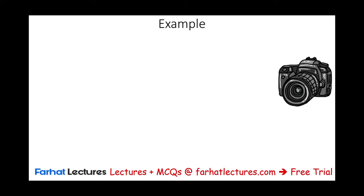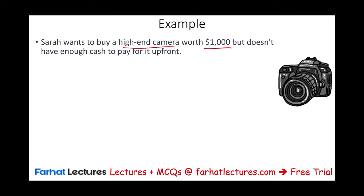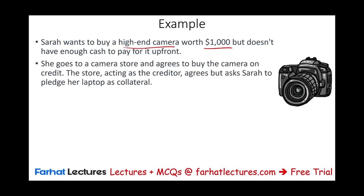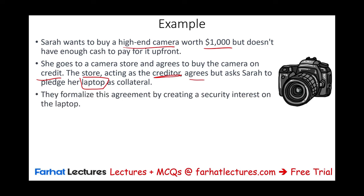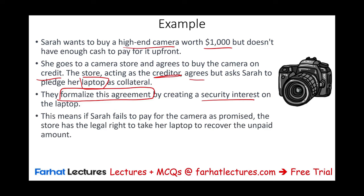Let's look at an example. Sarah wants to buy a high-end camera worth $1,000 but doesn't have enough cash. She goes to a camera store and agrees to buy on credit. The store, acting as the creditor and seller, asks Sarah to pledge her laptop as collateral. They formalize this agreement in writing, and the store has a security interest in the laptop. If Sarah fails to pay, the store has the legal right to take the laptop and recover the unpaid amount.